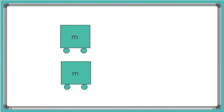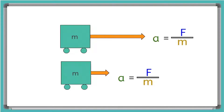If I have two carts with the same mass and I pull one cart with a big force and one with a small force, what do you think will be different about their accelerations? We can use the expression A equals F over M to think this through. If the mass is the same for both carts but one has a big force and the other has a small force, we expect the cart with the larger force to have a larger acceleration.